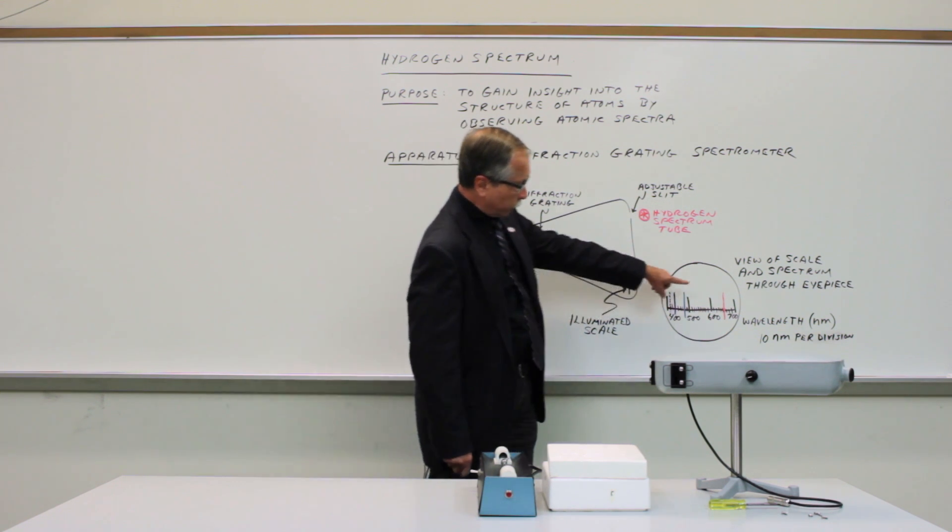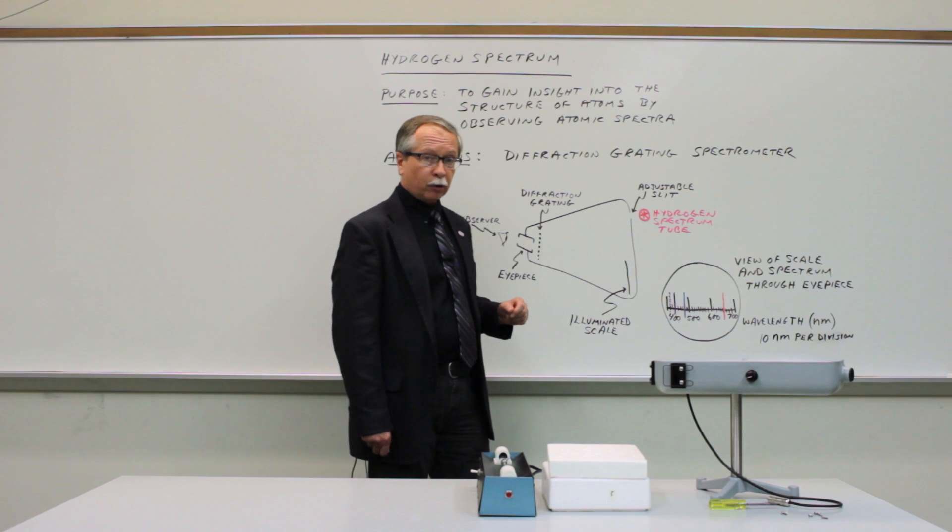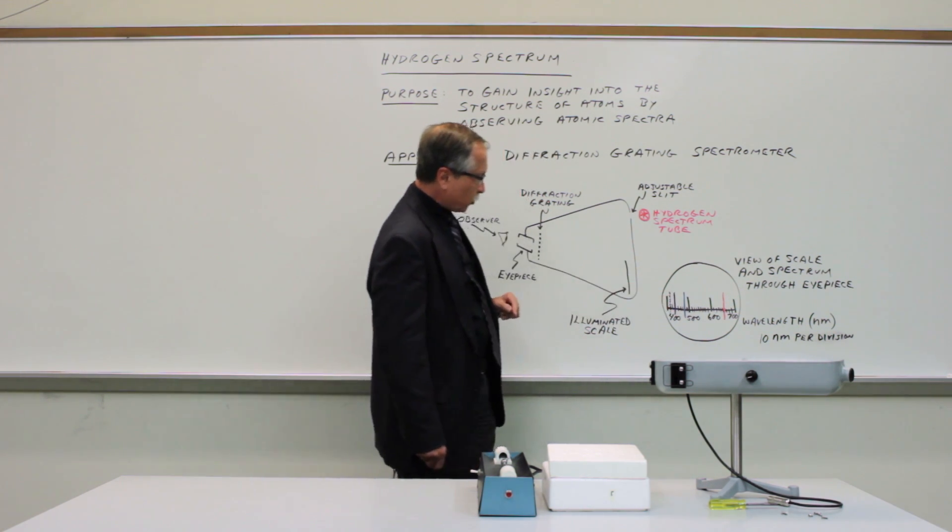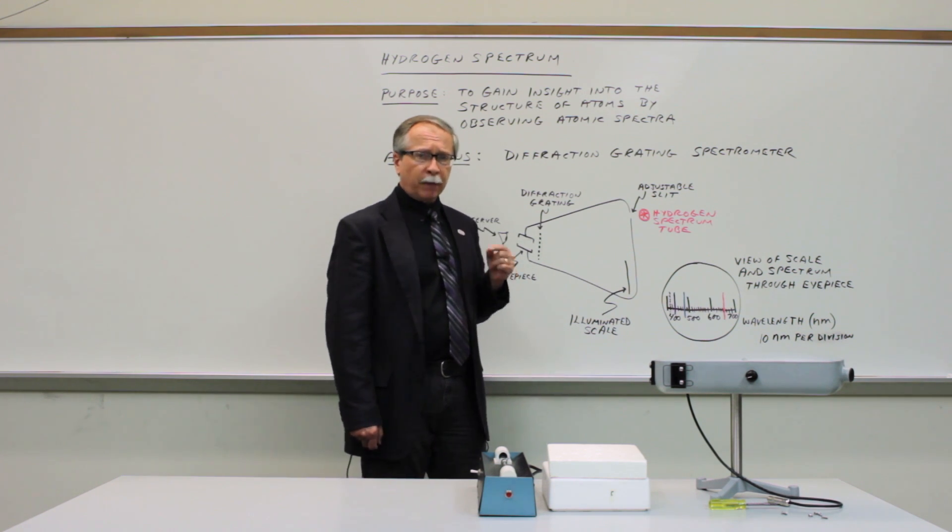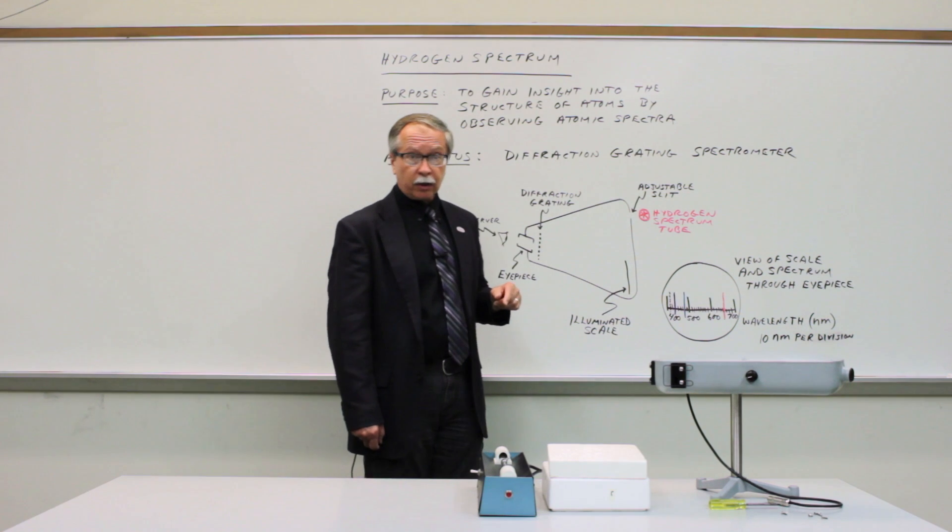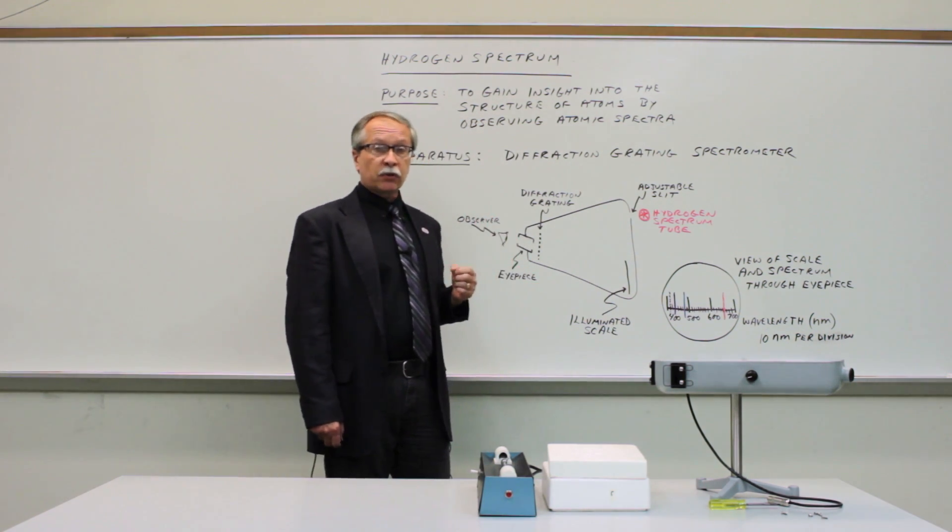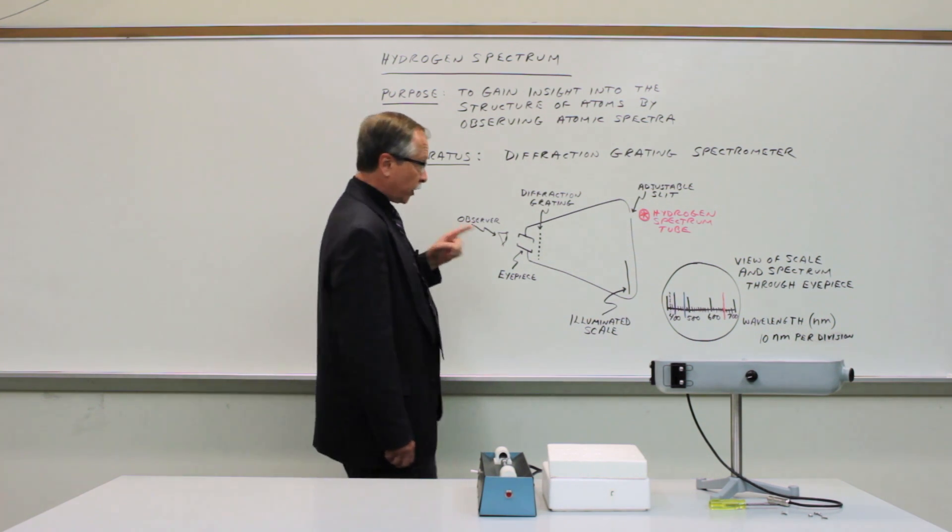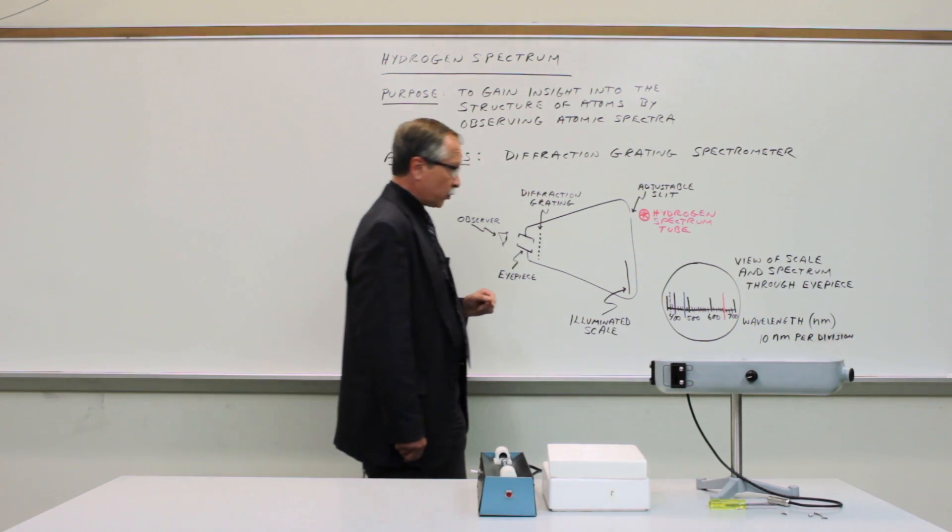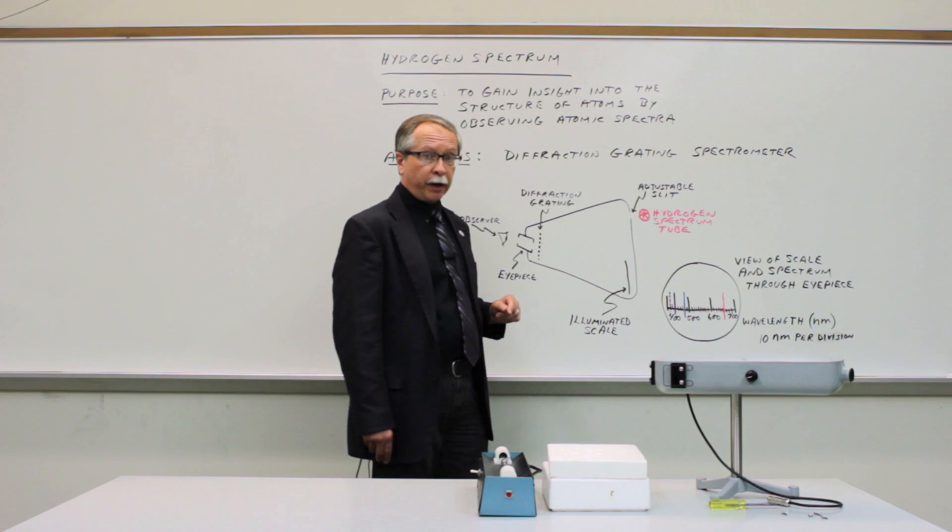Now everyone should be able to observe the red line in the hydrogen spectrum, which is the brightest of the visible lines, and also the blue line and the first of two violet lines. You might not be able to see the second violet line depending on the quality of the spectrum tube that you have. There are some real physical reasons why you might not be able to, and we'll get into the physics of atomic structure to account for why that second line is not very bright. But try your best to measure it if you can.